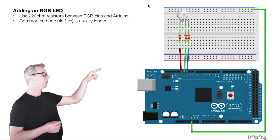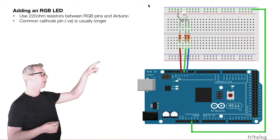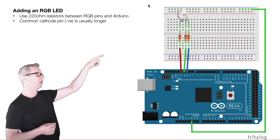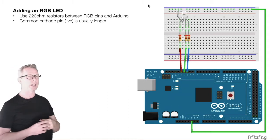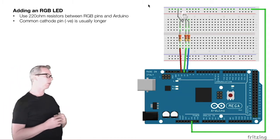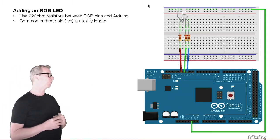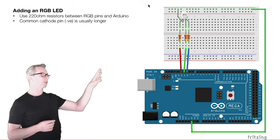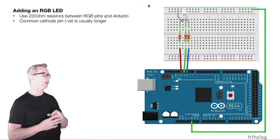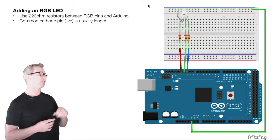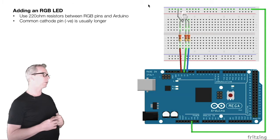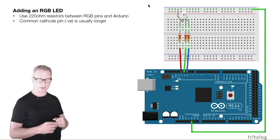The fourth leg of the LED goes to ground — it goes into the breadboard and then around and down into the ground pin on the Arduino. That's the simple diagram. If you want to pause the video, you can hook this up yourself following this instruction.